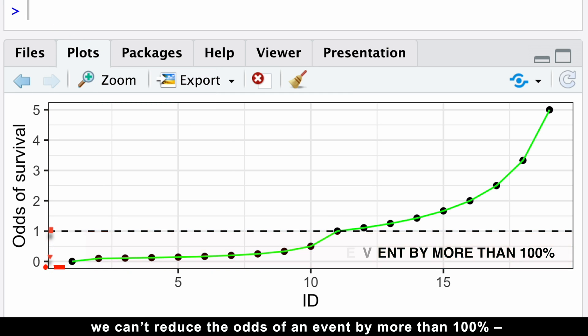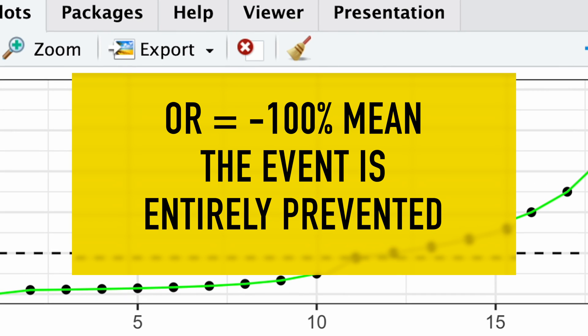That would mean the event is entirely prevented. The odds ratio higher than one makes even more sense when you think about the growing stock price.